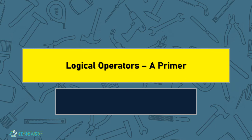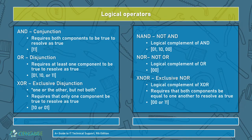Now we're going to take a look at logical operators. Whenever we construct circuits, we have to be able to process information in such a way as to produce different results, so we use these operators to construct logic circuits. Logical operators require the comparison of two operands — either a 0 or a 1 — because we're working in a binary environment. Looking at AND, this is what we call a conjunction. This requires both components to be true to resolve as true, so we have to have a true-and-true subcomponent.